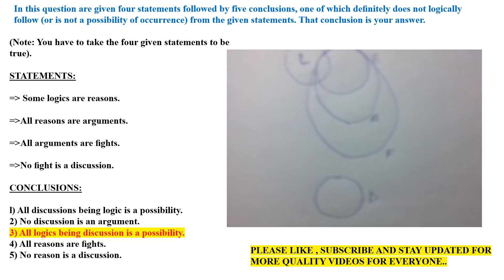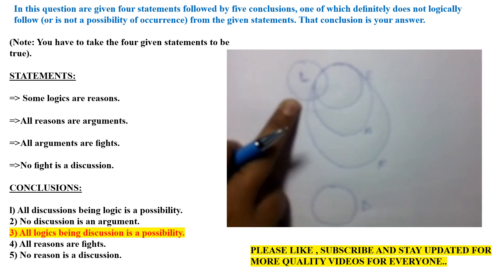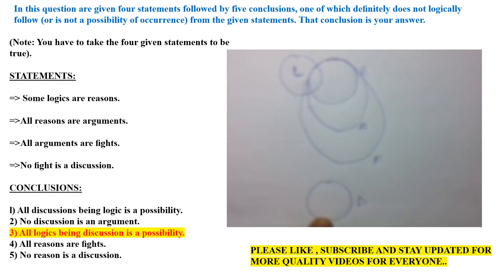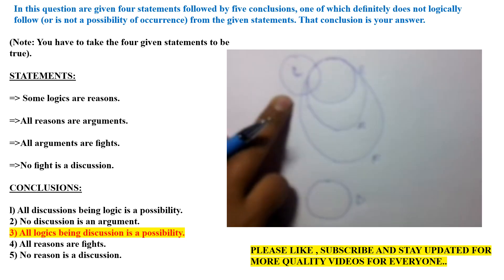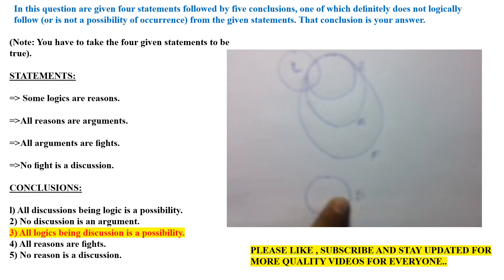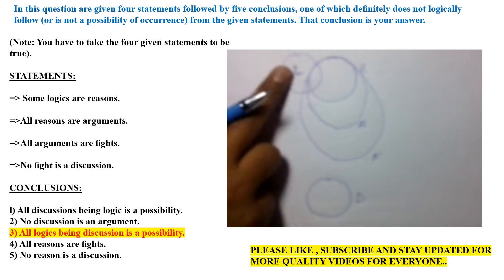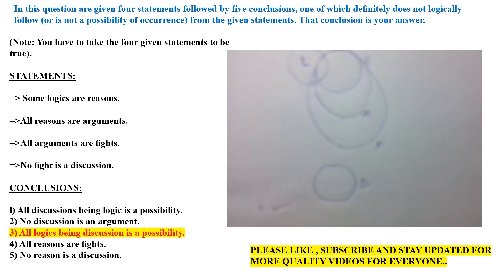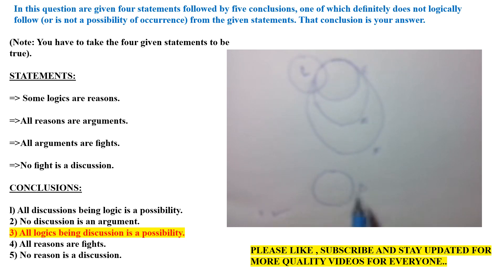The first conclusion is: all discussion being a logic is a possibility. All discussion can be a logic — because the last statement mentions no fight is a discussion, but all discussion can still be a logic as a possibility. So the 1st conclusion is correct. The 2nd conclusion is: no discussion is an argument. This is also logically correct.